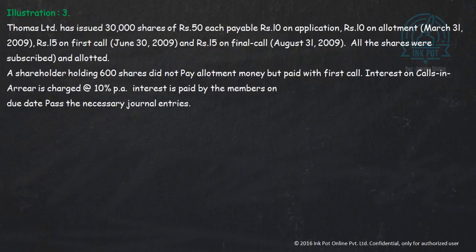The question is: Thomas committed to issue 30,000 shares of Rs. 50 each, payable Rs. 10 on application, Rs. 10 on allotment due March 31st 2009, first call due on June 30th 2009, and the final call due on August 31st 2009.